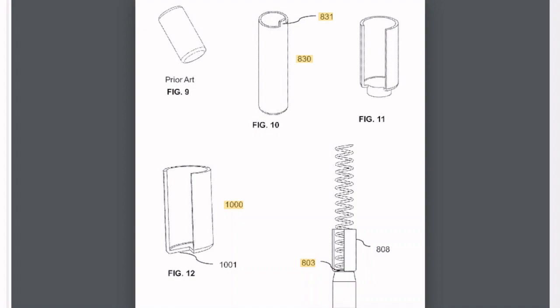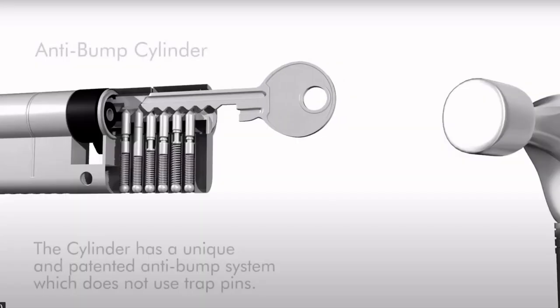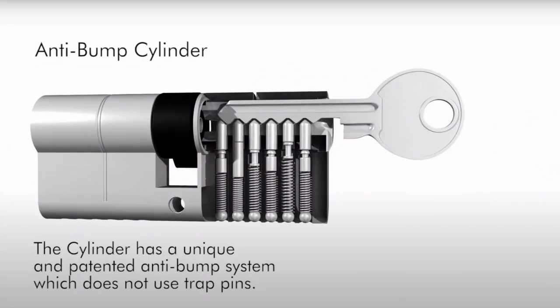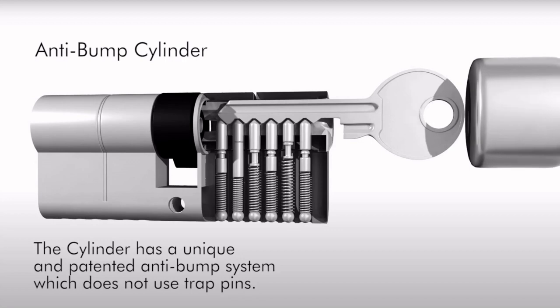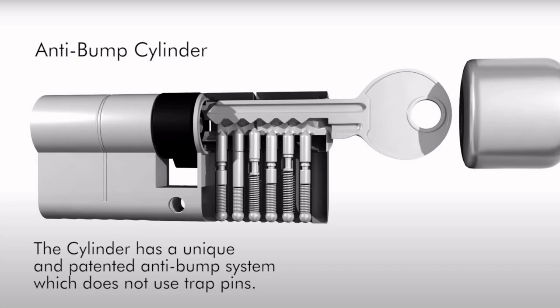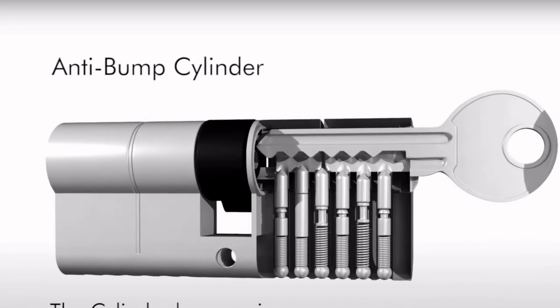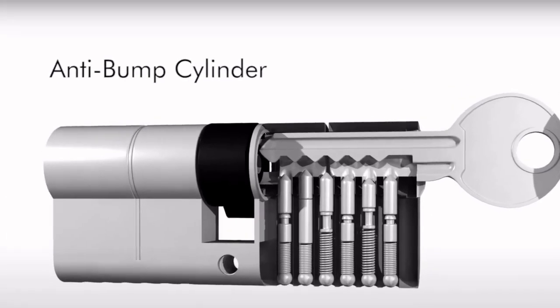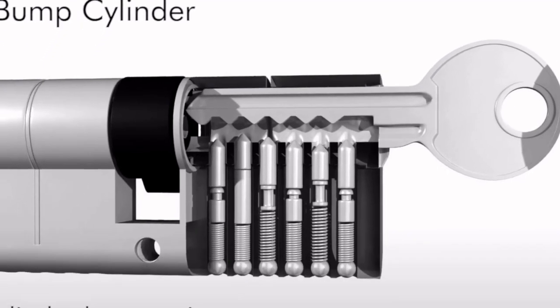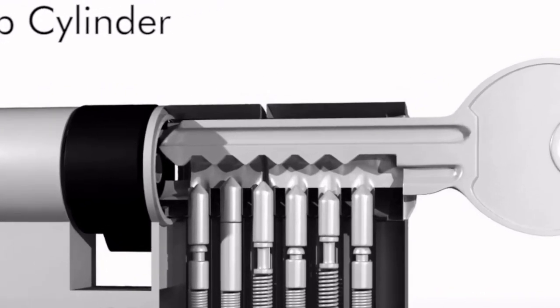But this brings us back to the zero lift pin. Now the idea of the zero lift pin is the split in the pin stack is already on the shear line. In this diagram it's going to be pin five I'm guessing, so if you try and use a bump key on it, as soon as you strike the bump key you're gonna overset the zero lift pin. So a bump key will not work on this lock, or will it?